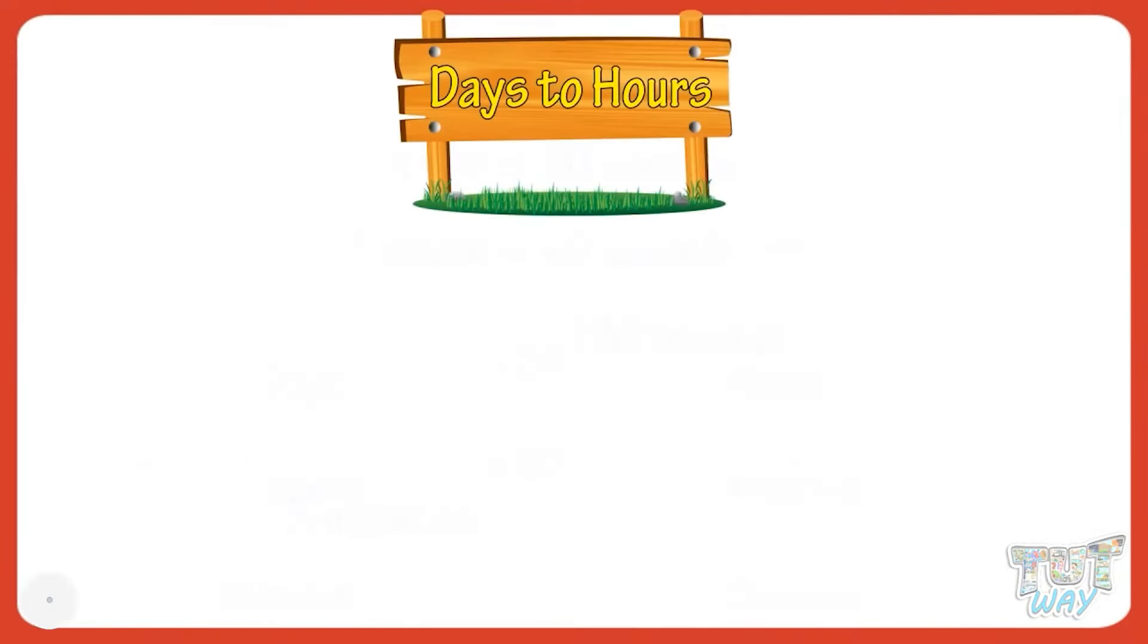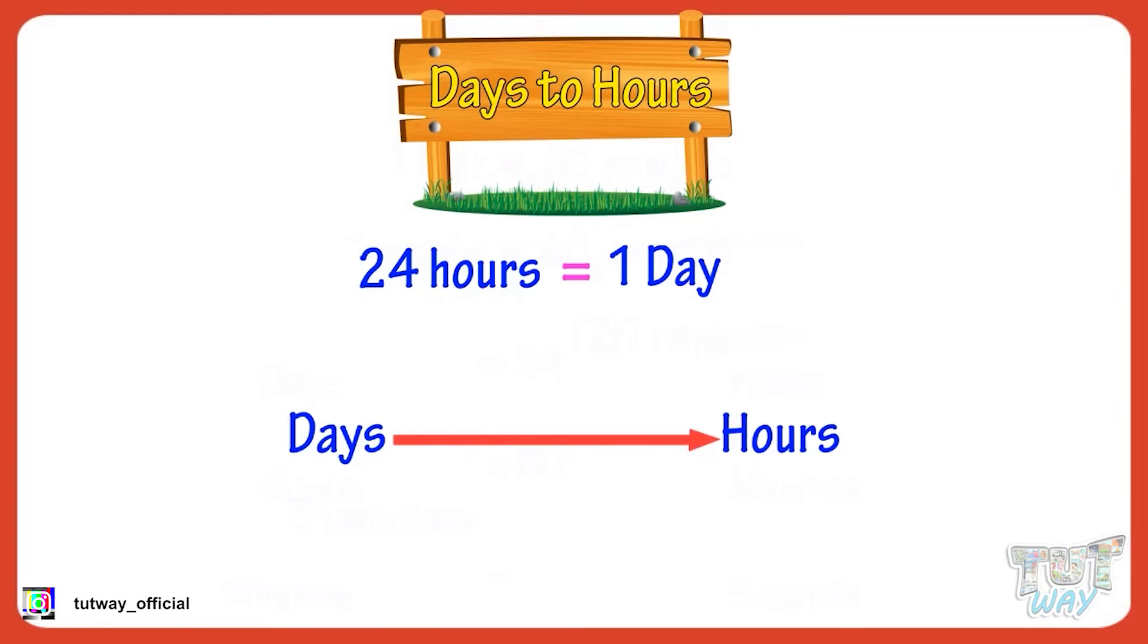Days to hours. Kids, there are 24 hours in a day. So to convert days to hours, we need to multiply days with 24.